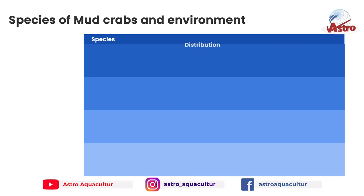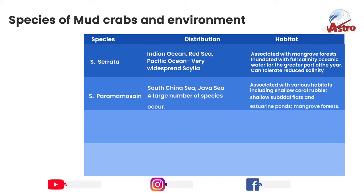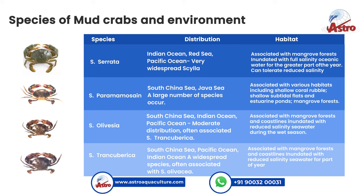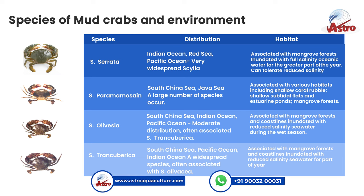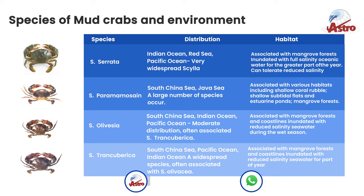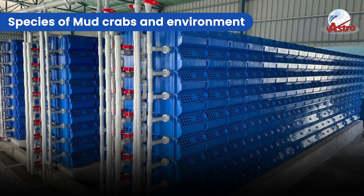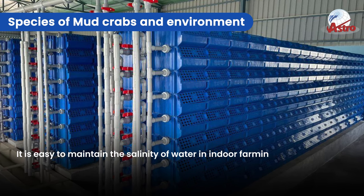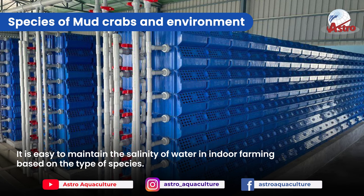Species of Mud Crabs and Environment: The table provided shows details about the suitable environment in which Scylla survives. Species like Scylla serata and Scylla paramamosain can tolerate southern India water conditions, but Scylla olivacea and Scylla tranquebarica survive only in places where low salinity is available. It is easy to maintain the salinity of water in indoor farming based on the type of species.